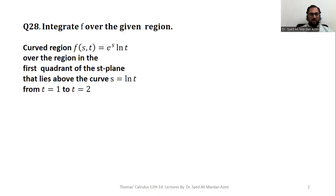The region is in the first quadrant of the st-plane, formed by the curve s = ln(t), t = 1, and t = 2.